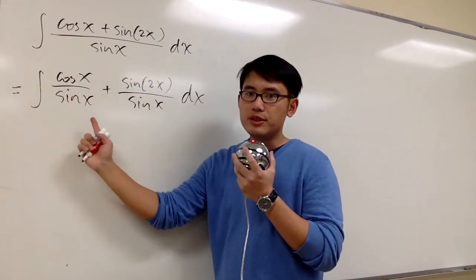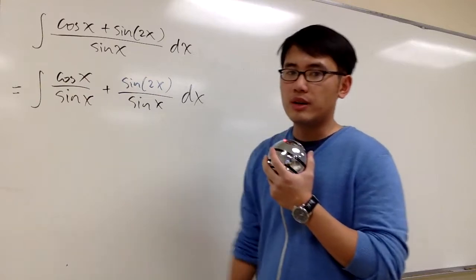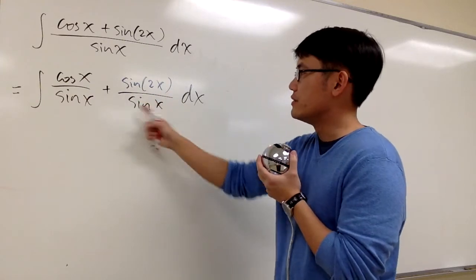For the first one, this is just going to be cotangent. You can also use u-substitution here and work that out easily. But how can we take care of this?